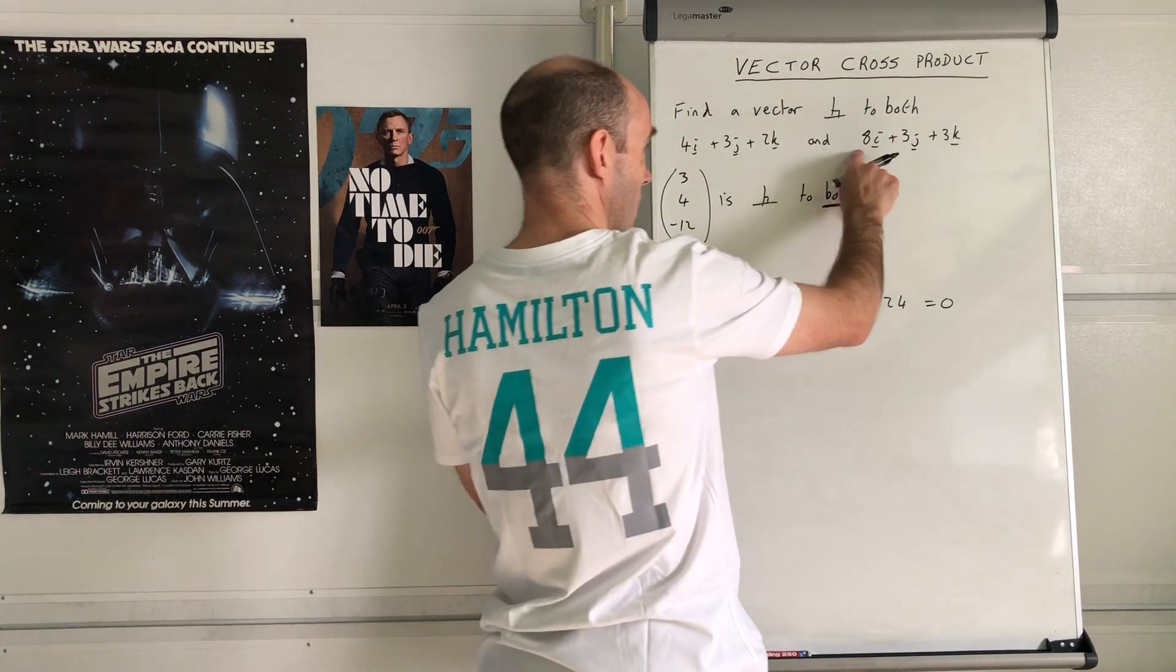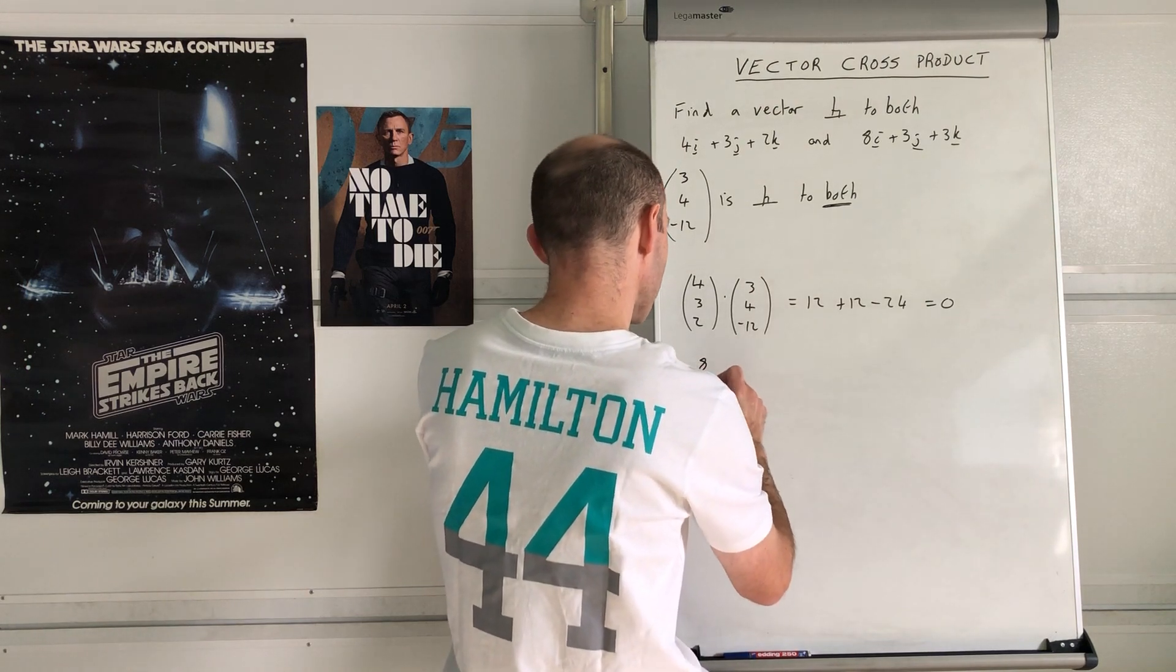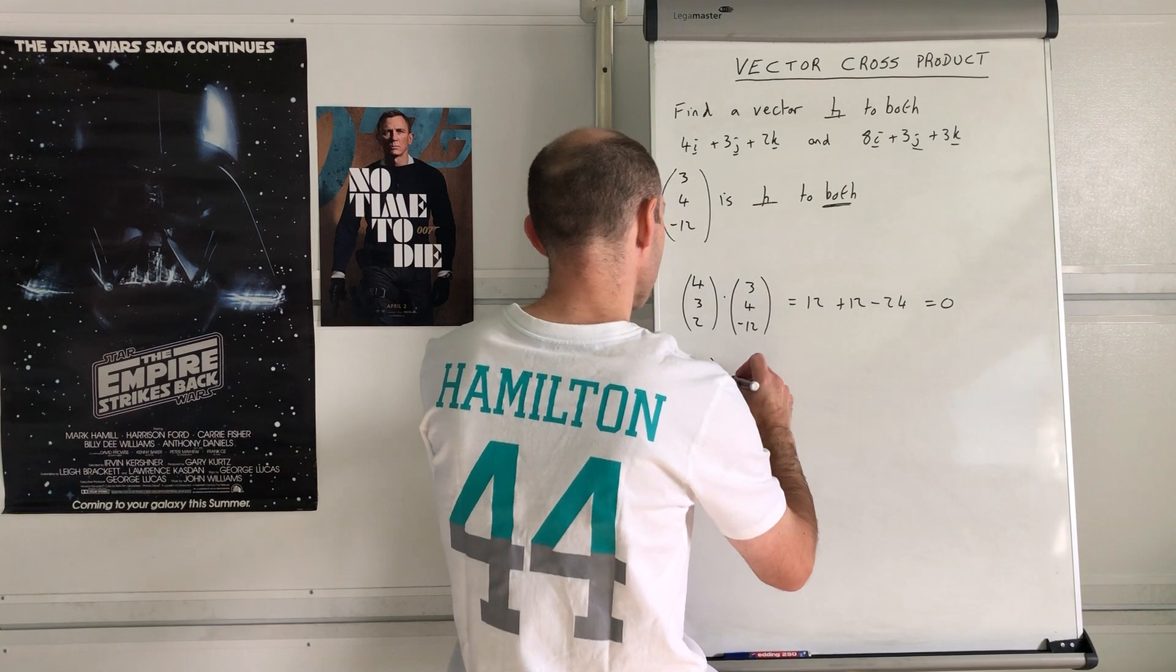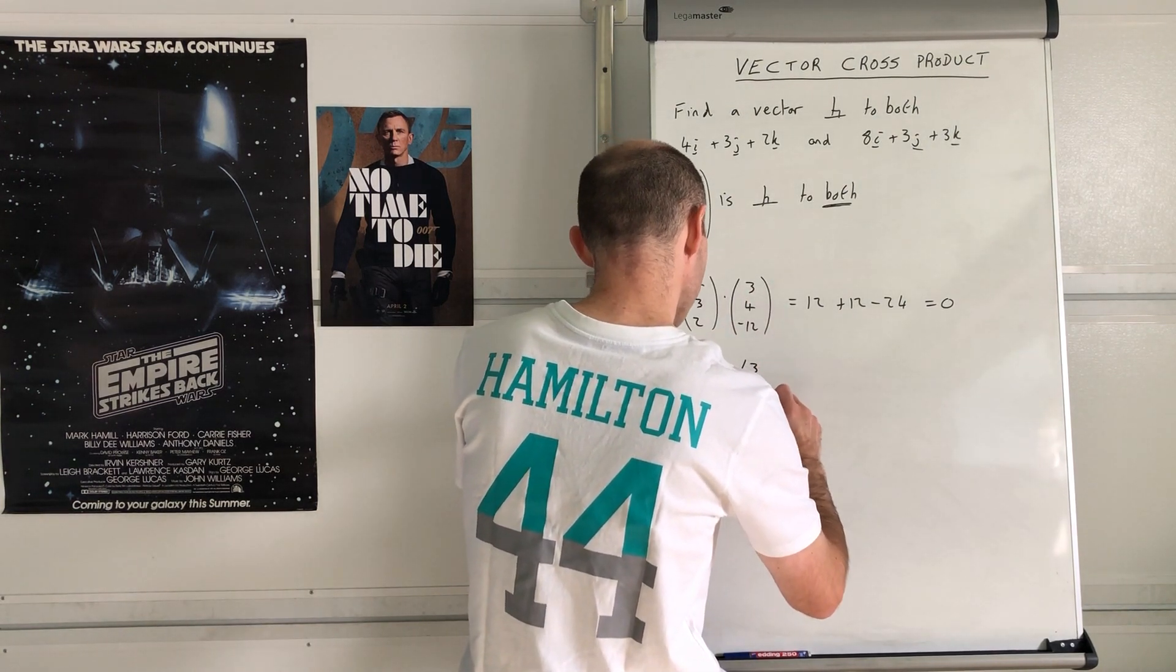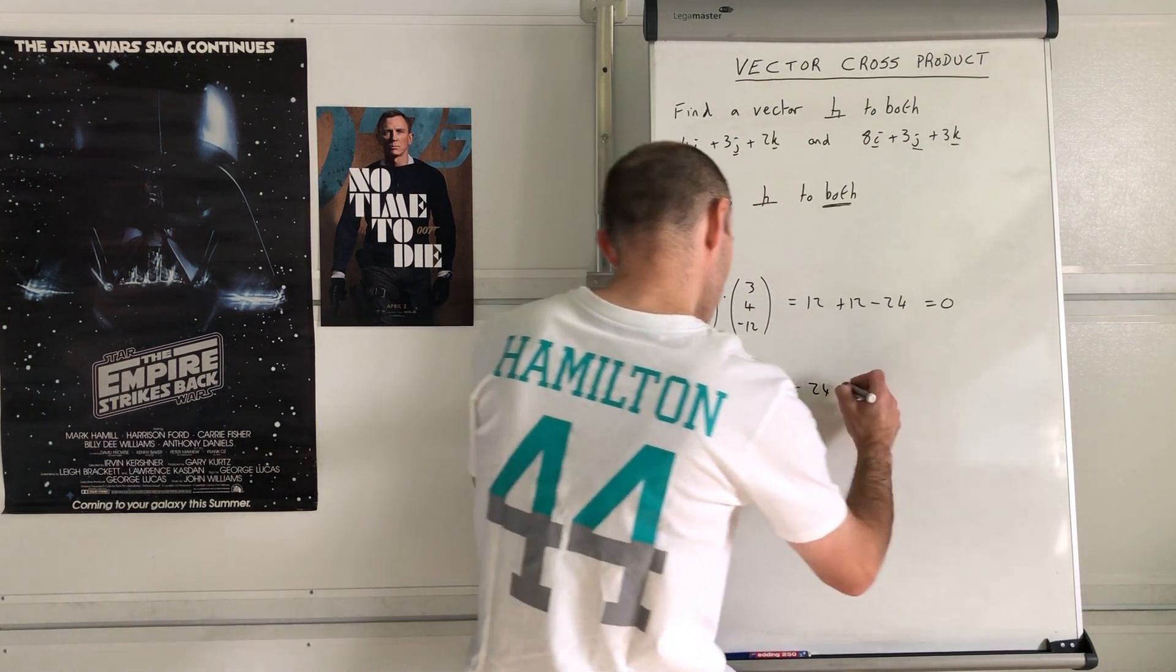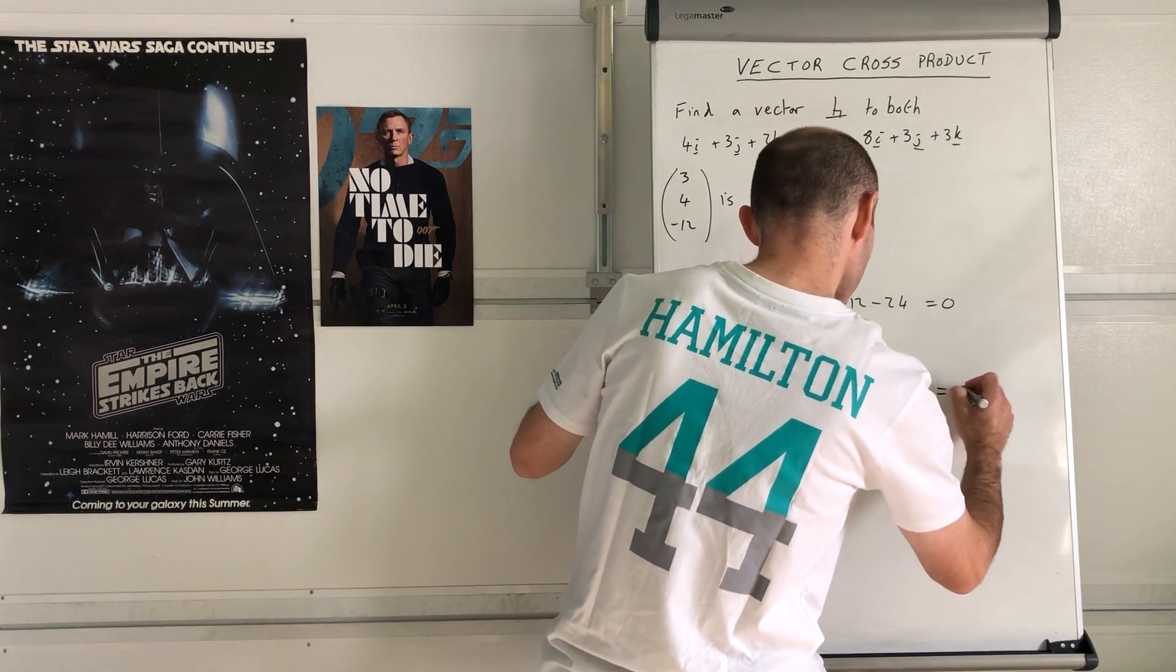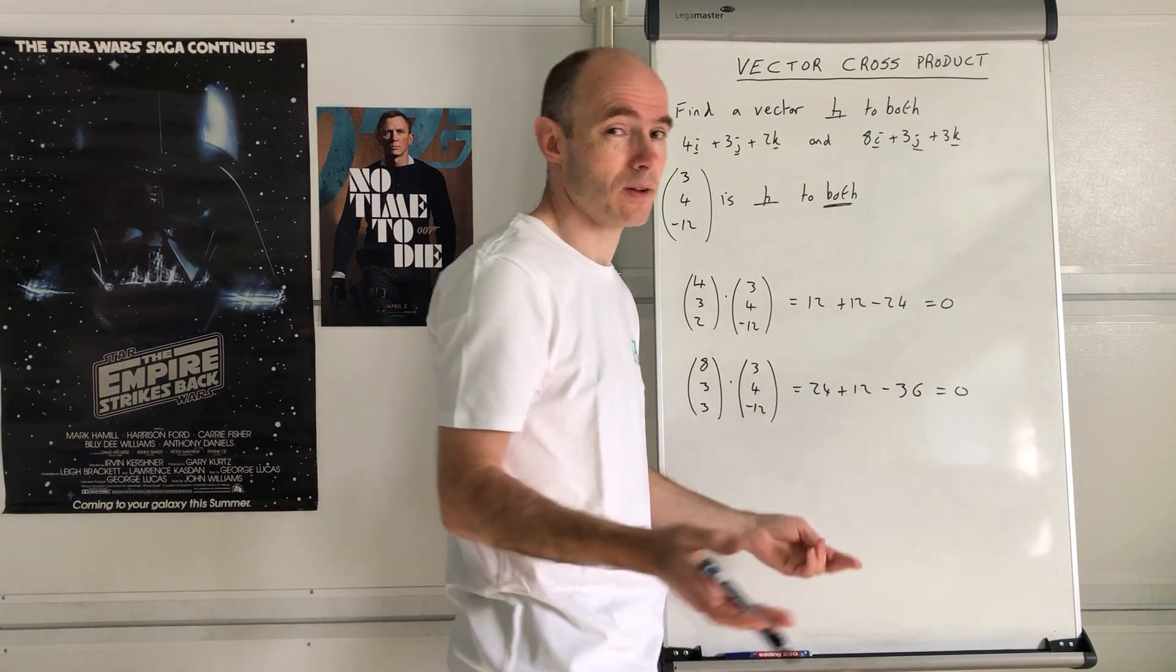The other vector is 8, 3, 3 dot 3, 4, negative 12. Can you guess what this is going to be? That's 24 plus 12 subtract 36 equals 0.